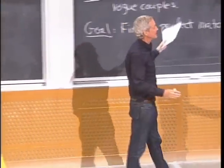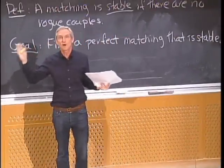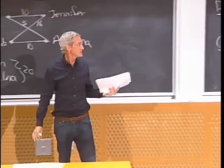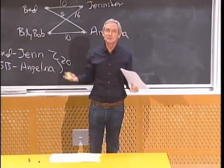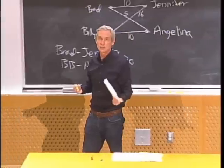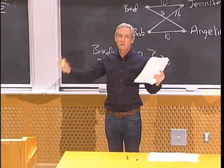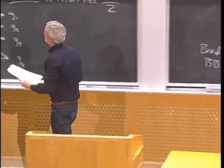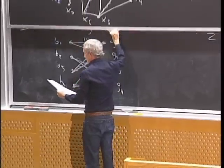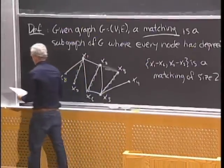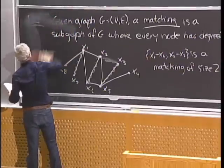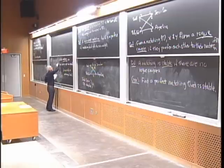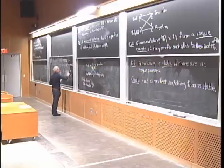This is not very surprising — in the unisex world you can't always find stable matchings. The surprising thing is you can always find a stable matching in the world where boys can only be paired with girls and vice versa. This result is known as the stable marriage problem.